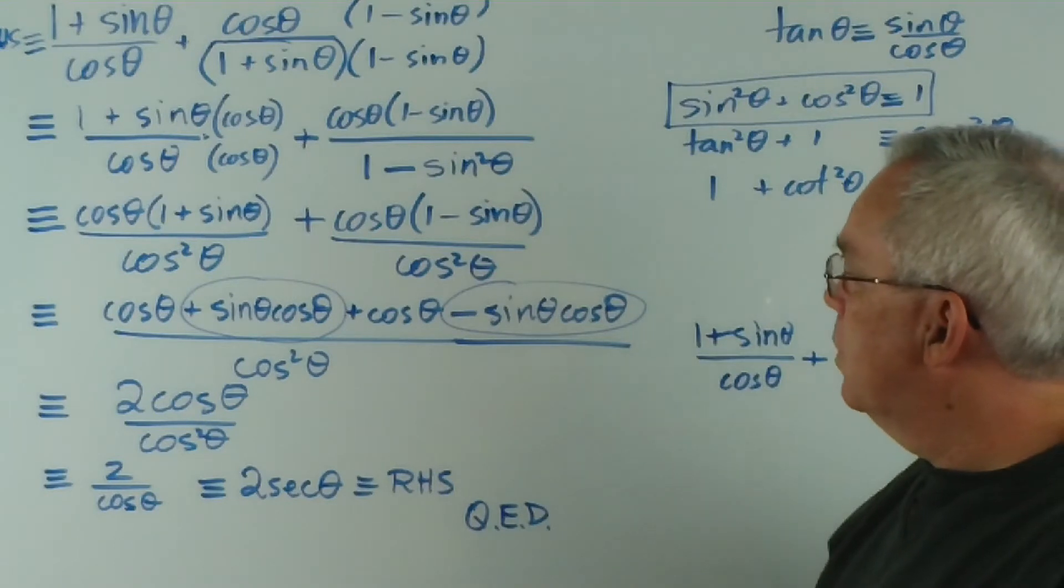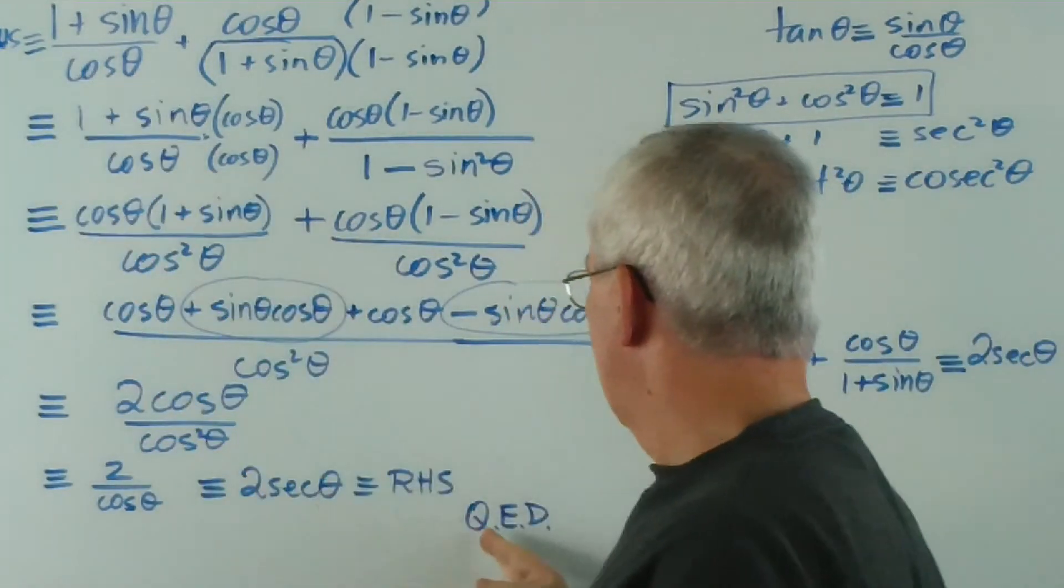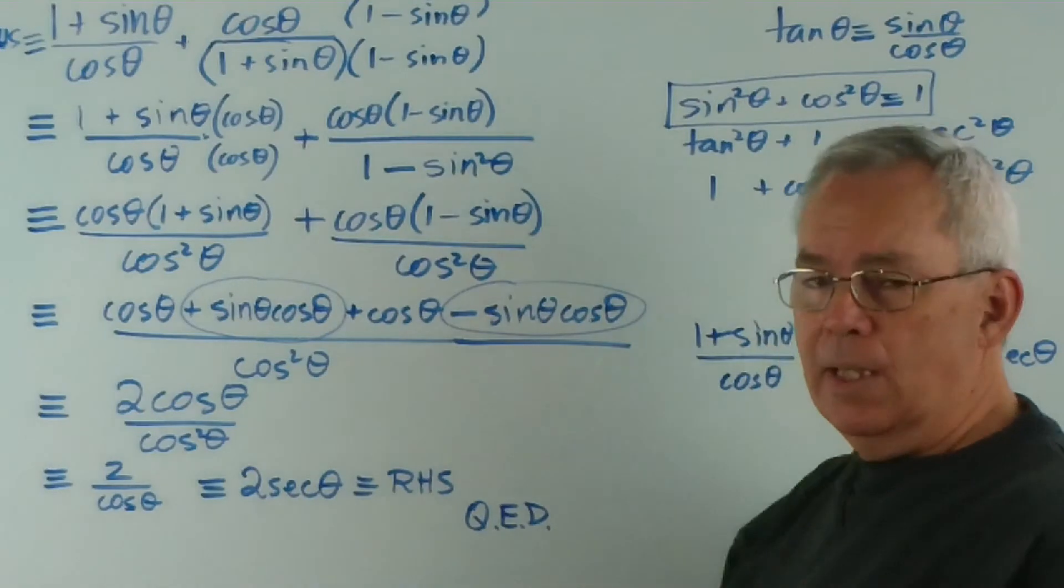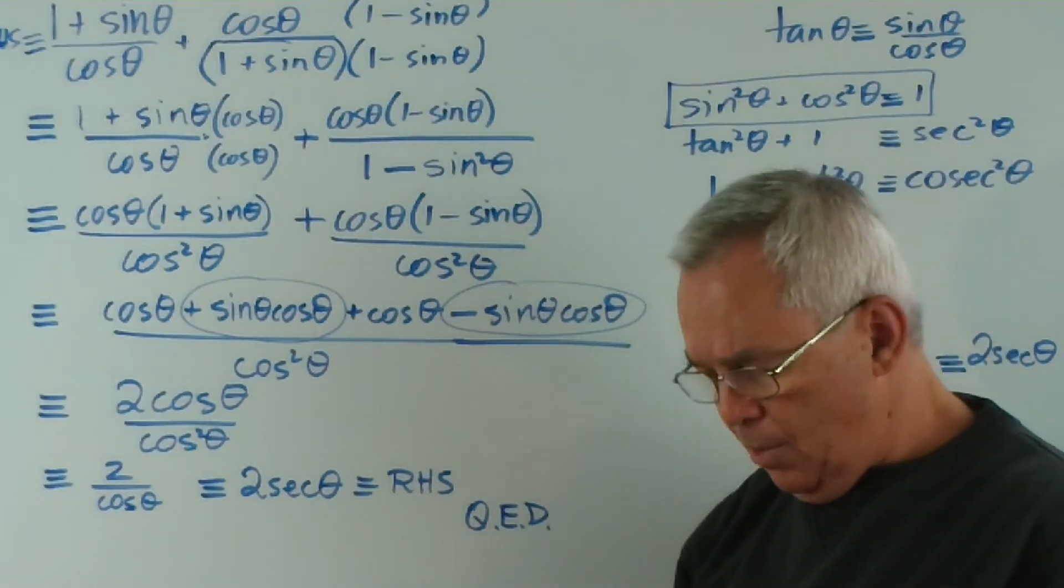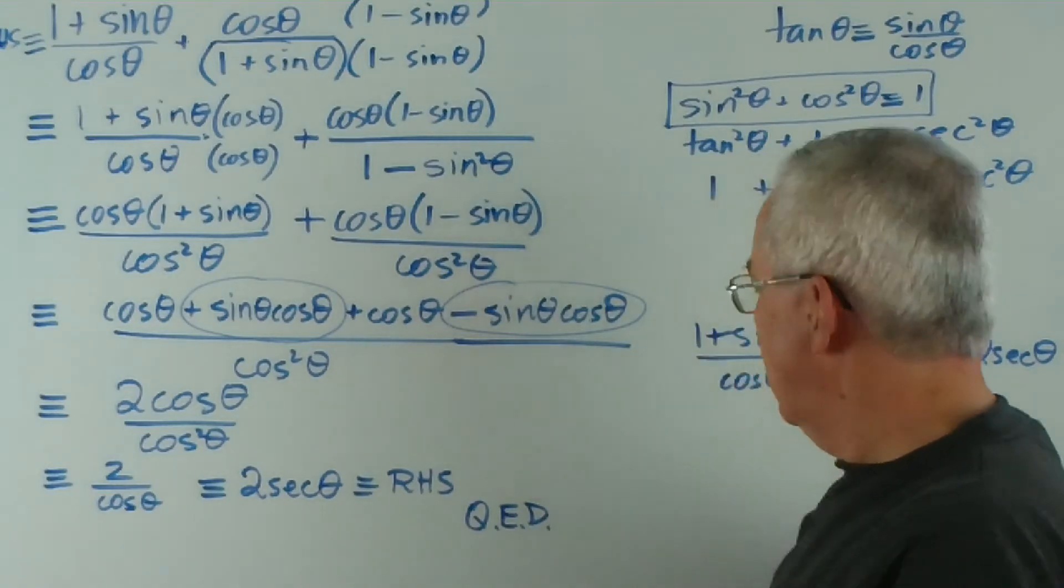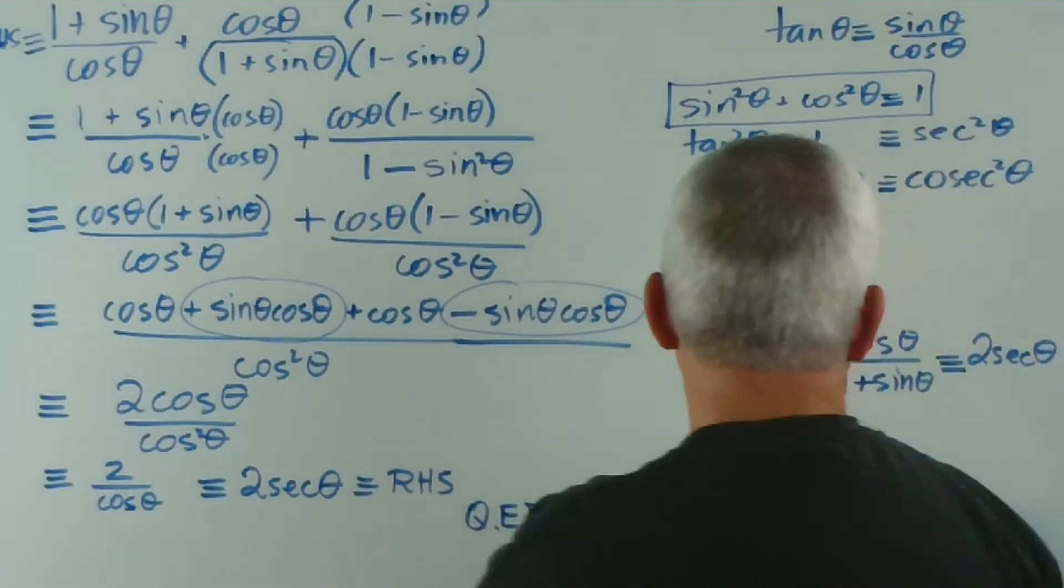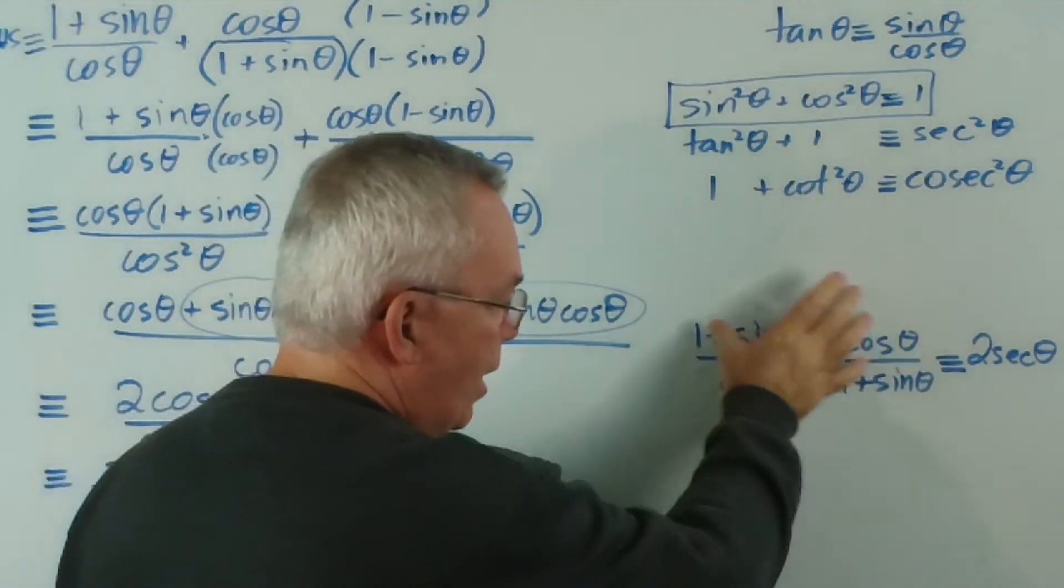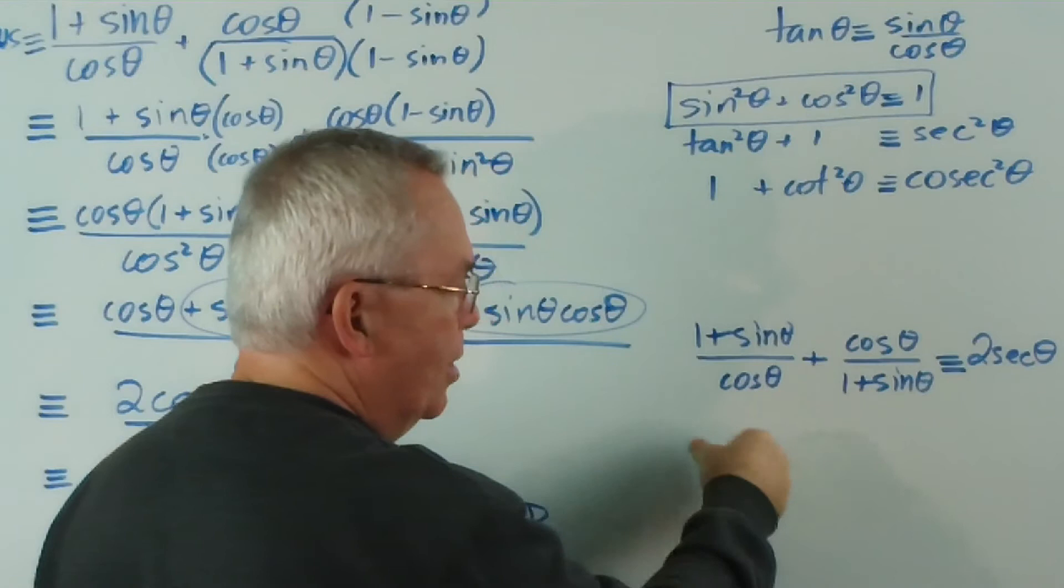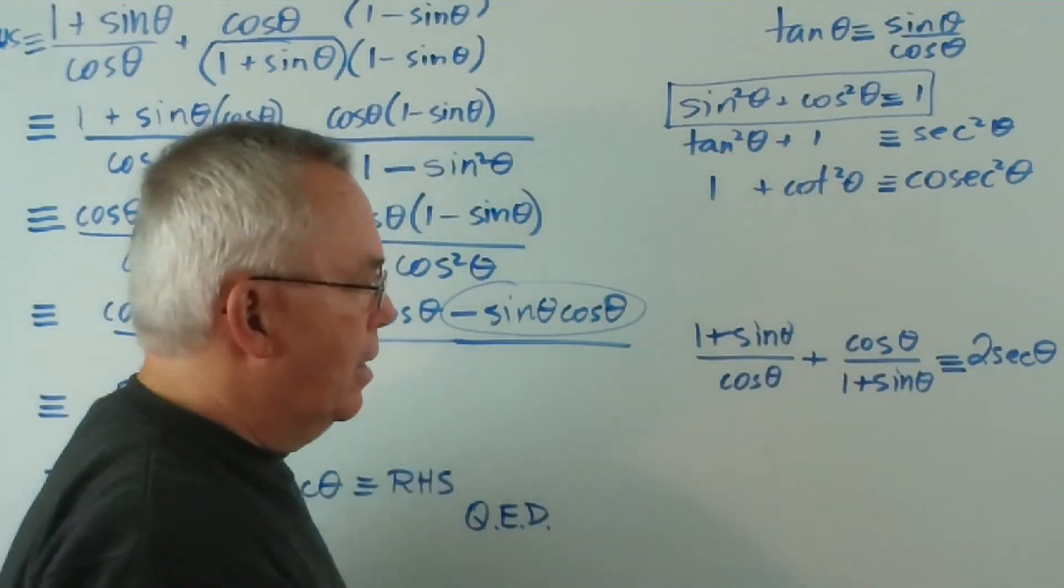So there you go. We were supposed to show that the left-hand side matched the right-hand side. And that's exactly what we've demonstrated. I hope that's helped. It may not be the way that you solved it, Dhanushan, but I hope this insight has helped you understand how I look at simplifying trigonometric expressions and proving identities.